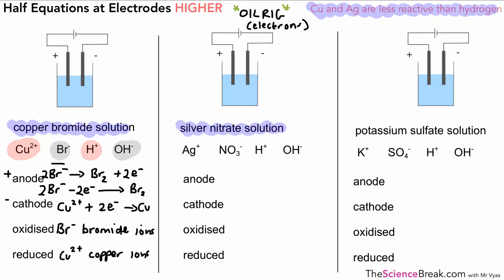Here we've got silver nitrate solution, and the ions present are shown again. At the anode, the rule is it's going to be oxygen unless there is a halide present — there is no halide present — so we're going to have oxygen. It comes from the hydroxide ions: 4OH⁻ produces two molecules of water and oxygen, with four electrons released. That's what happens at the anode — oxygen gas is given off.